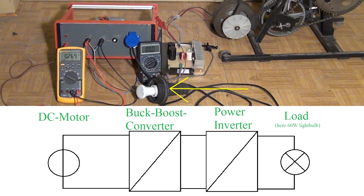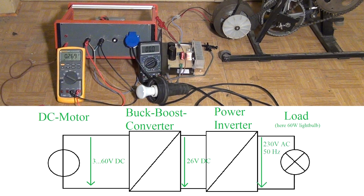In this first setup the buck boost converter is driven by 3 to 60V DC but always stepping up or down that input voltage to an exact output voltage. Here 26V DC. These 26V are then fed to the power inverter which is stepping up and reshaping it to 230V 50Hz AC.